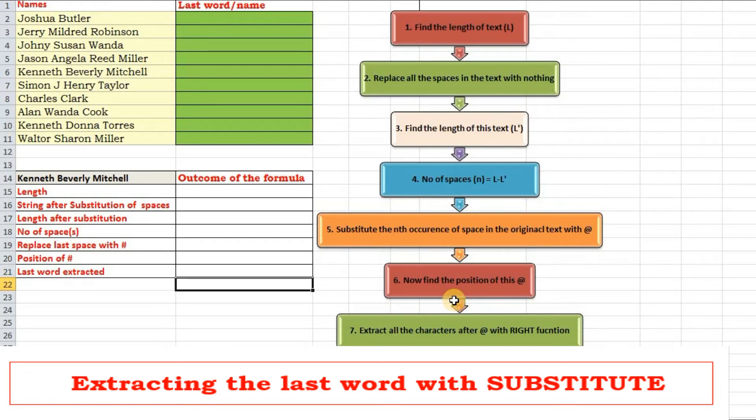Now follow the flowchart to see the steps in achieving our task. Space is to be replaced by nothing. Now we will find the length of this text and when we subtract this length minus this length it will give me the number of spaces that were present already in this text.